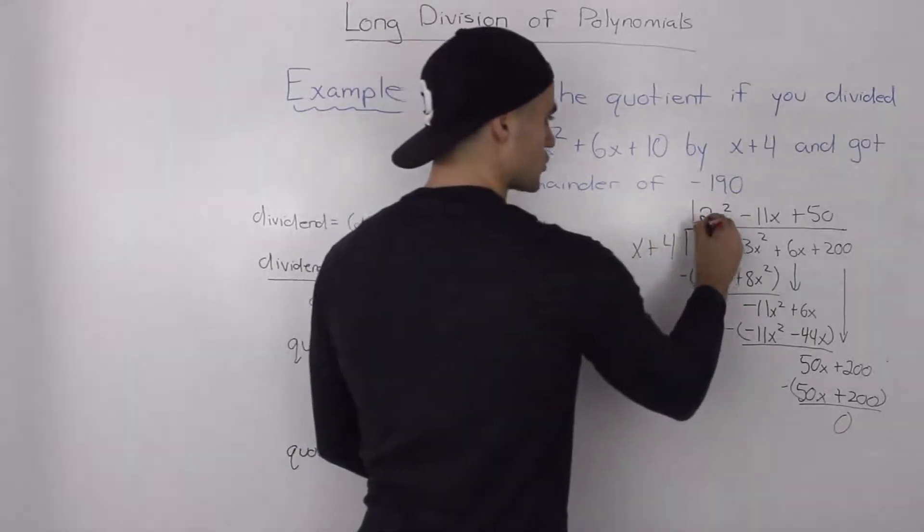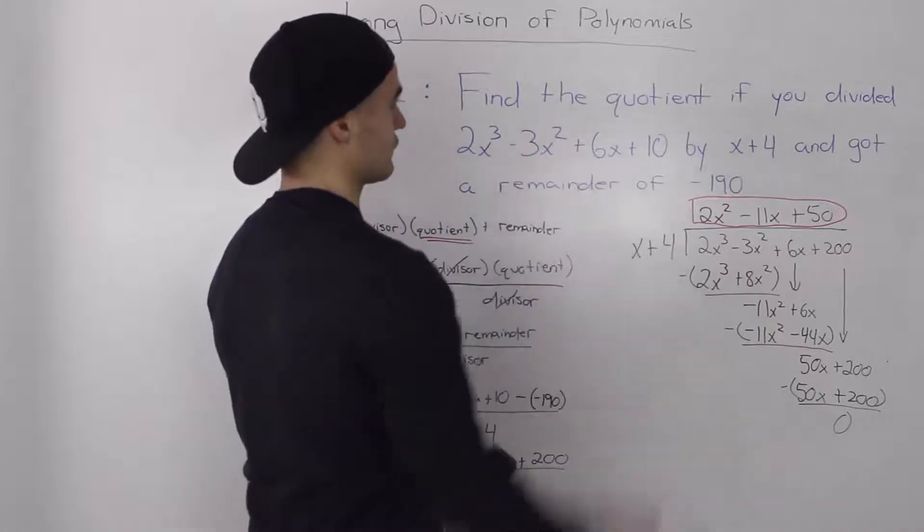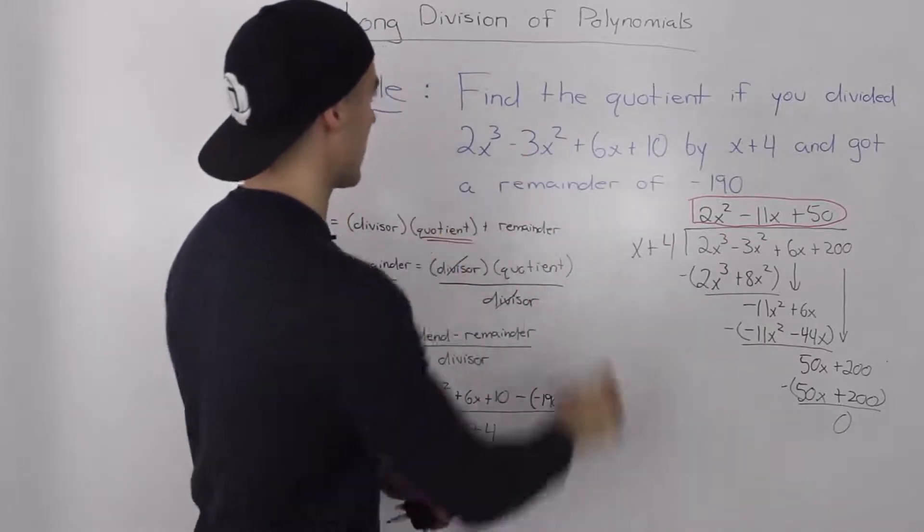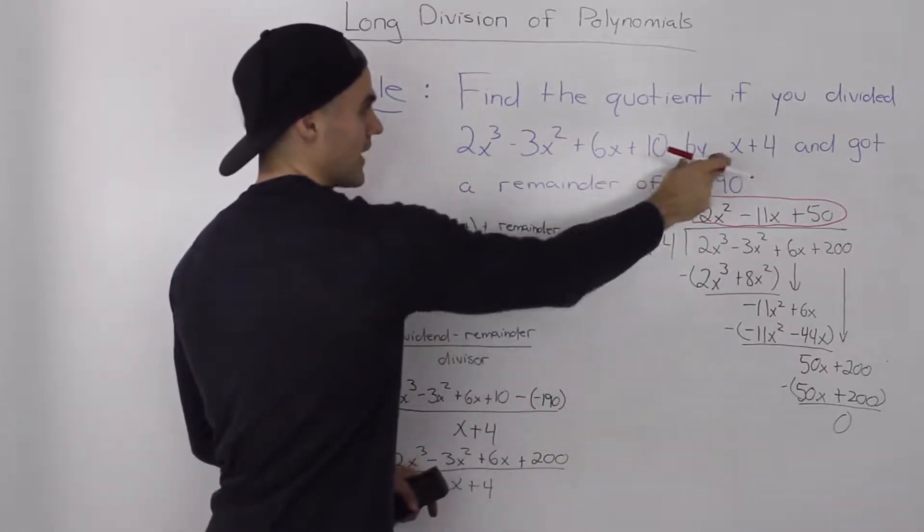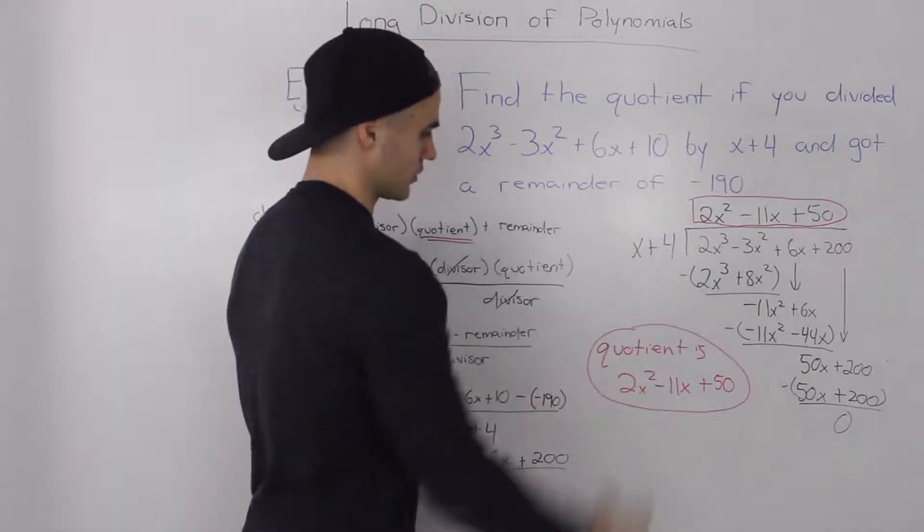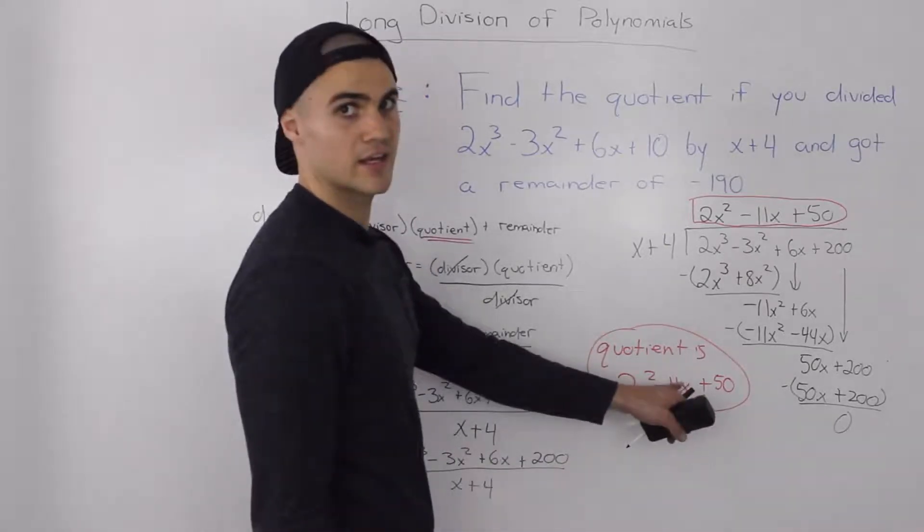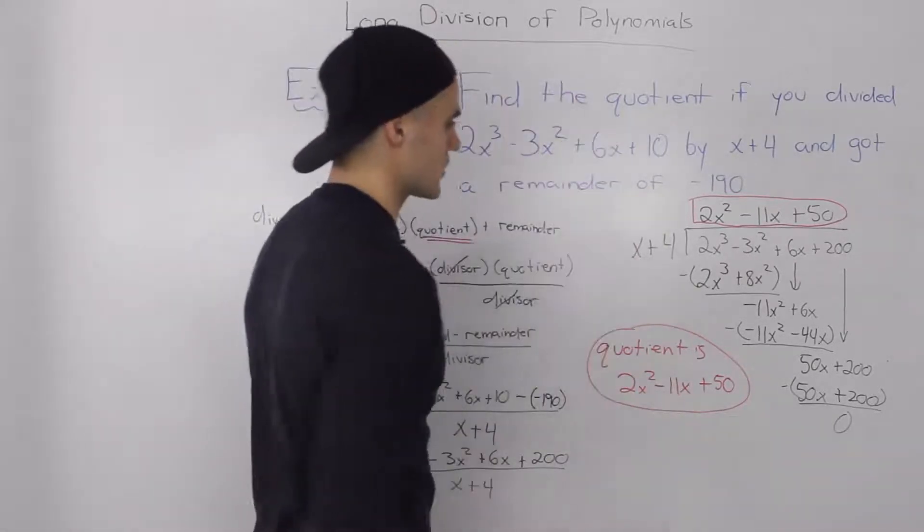So this here, this quotient that we got, that is our answer. Find the quotient for when you divide this polynomial by x + 4 and get a remainder of -190. So basically our quotient is 2x² - 11x + 50 for this question that we got.